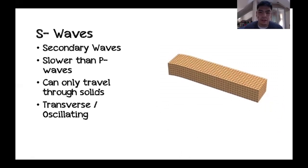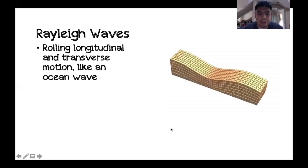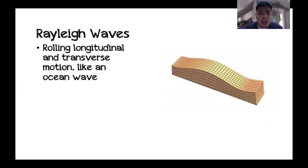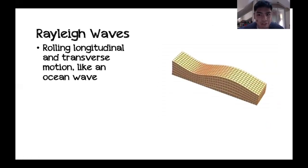Rayleigh waves are distinguished by their rolling longitudinal and transverse motion, which you can visualize like waves in an ocean wave.